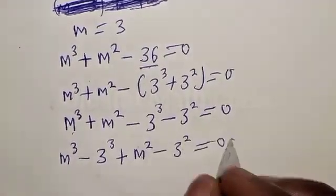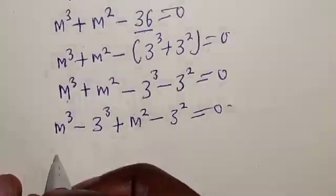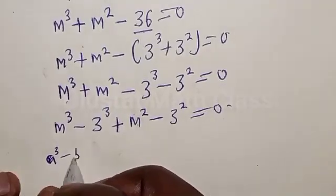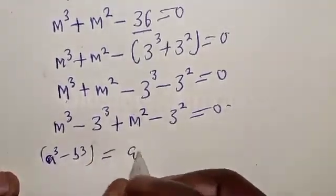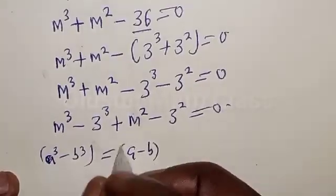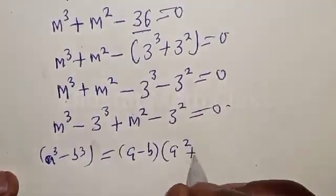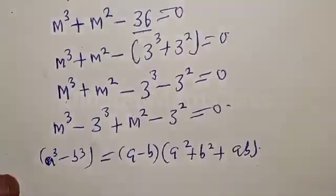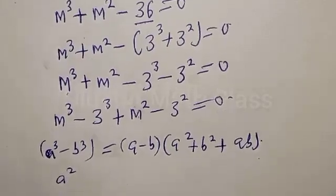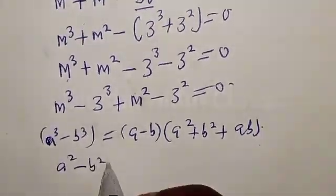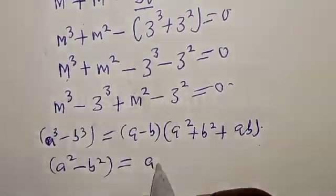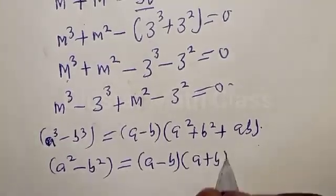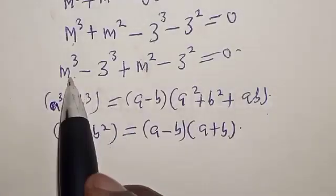Remember, if you have a³ minus b³, it equals (a minus b) into (a² plus b² plus ab). Also, if you have a² minus b², it equals (a minus b) into (a plus b).